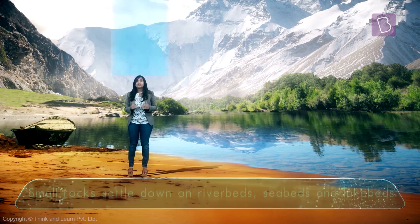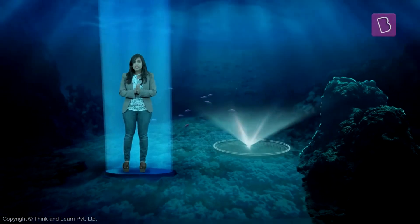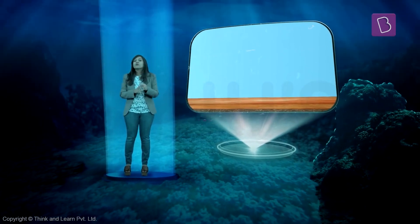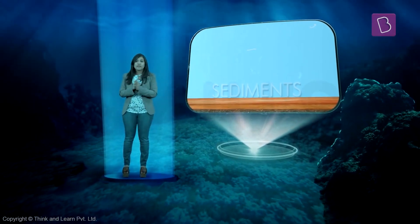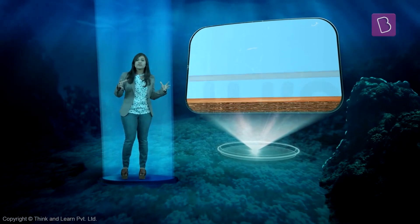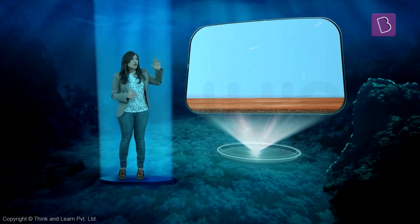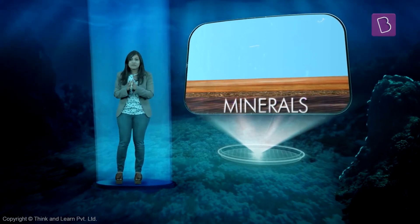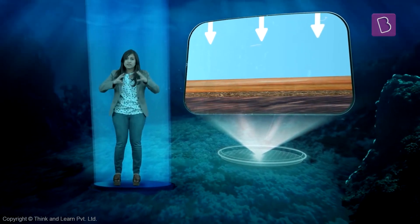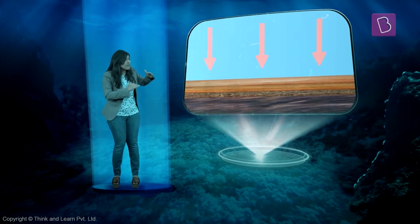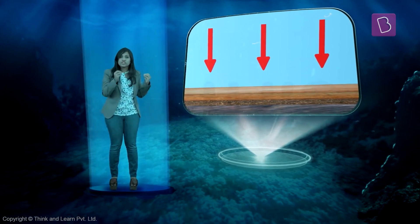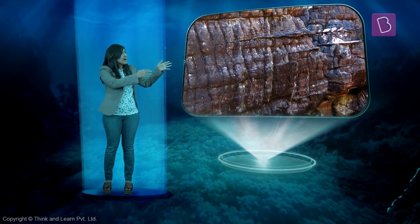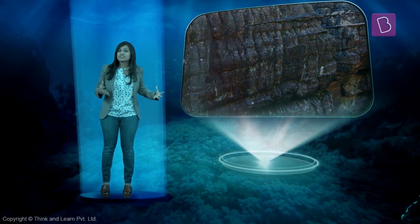Let's go a little deep to see what's happening. They form a layer of soil and rock at the bottom called sediments. As more and more layers start settling down, you can see that minerals are starting to get deposited in them. The pressure of the layers is going to squeeze everything together and eventually form hard solid rocks. These rocks are called sedimentary rocks.